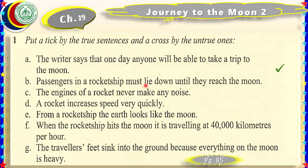Statement two: 'Passengers in a rocket ship must lie down until they reach the moon.' No — they lie down in the beginning but not until they reach the moon. Statement three: 'The engines of the rocket never make noise.' No — they make a lot of noise. Statement four: 'A rocket increases speed very quickly.' Yes — the rocket increases speed very quickly, so that is true.